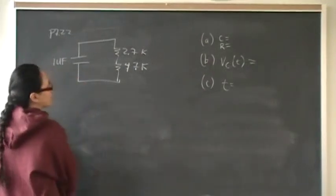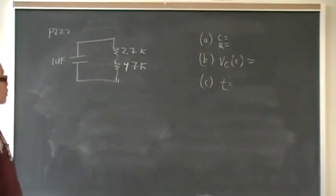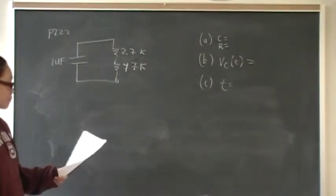So this is going to be 1 microfarad, 2.7K and 47K. And I call that good. So that is part A, my part A, for right or for wrong. I don't care.